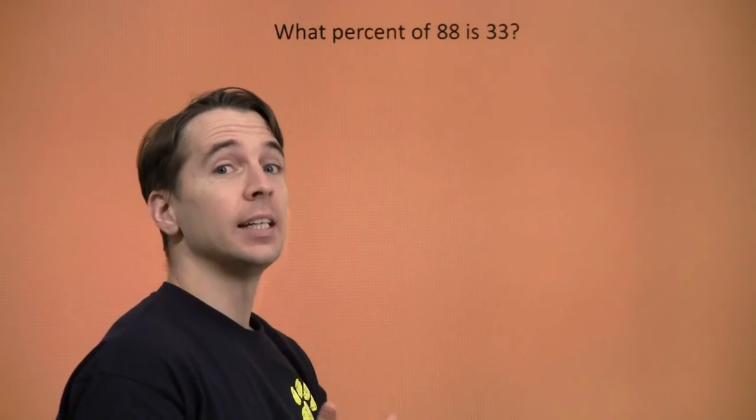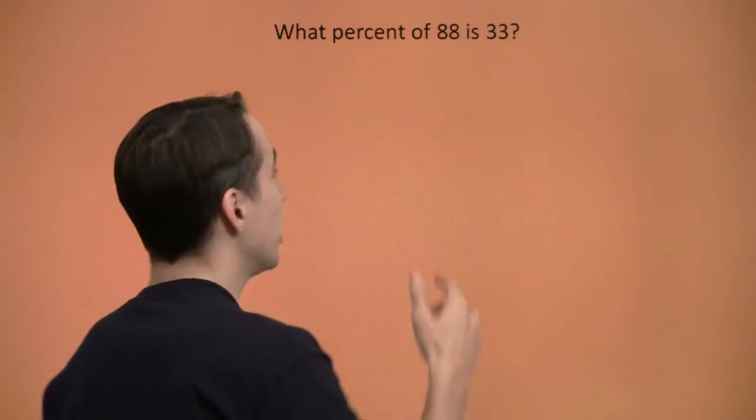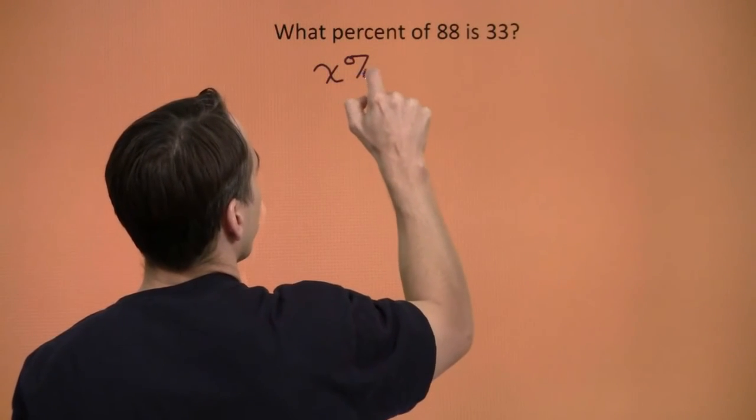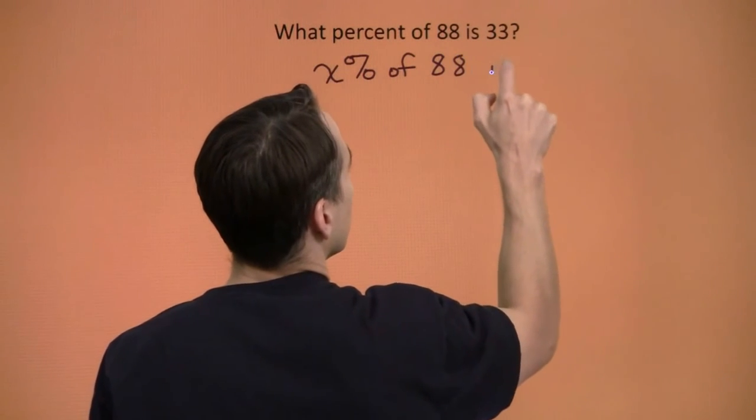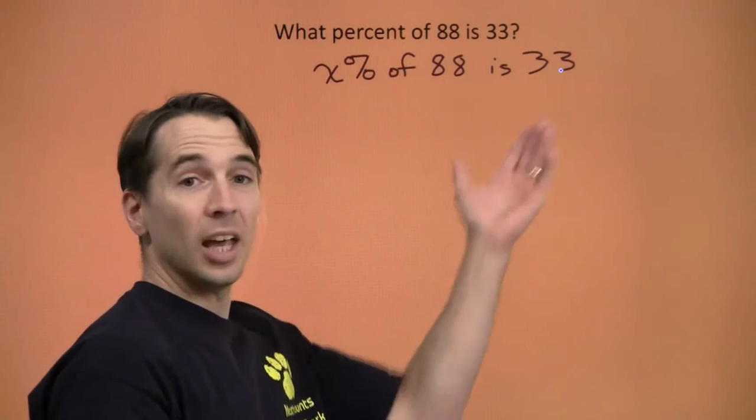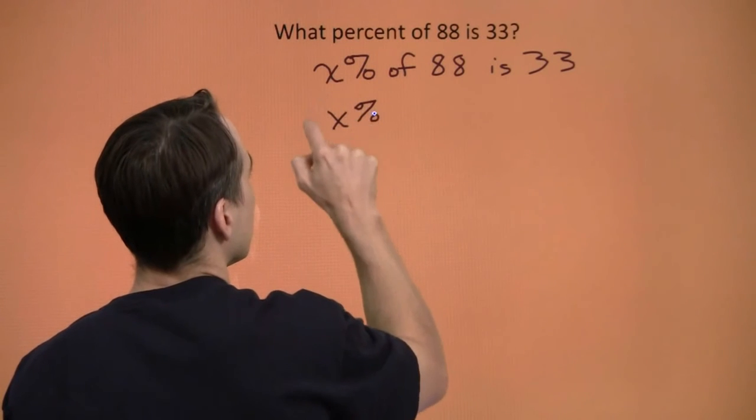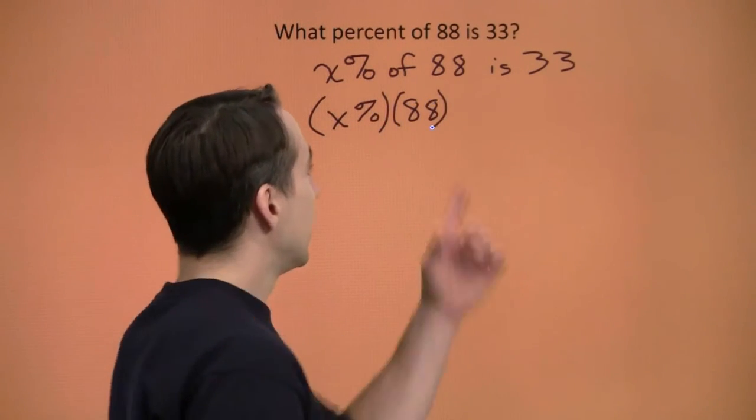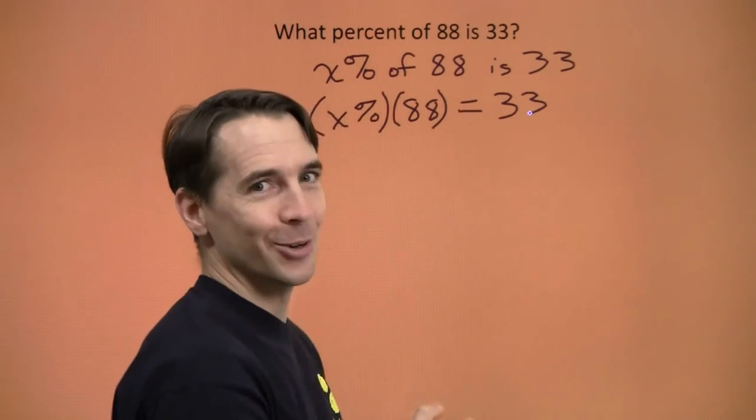What percent of 88 is 33? Now, I can start to turn these words into an equation by throwing in a variable. We'll say x percent of 88 is 33. X percent of 88 means x percent times 88. Is means equals. And 33 means 33.